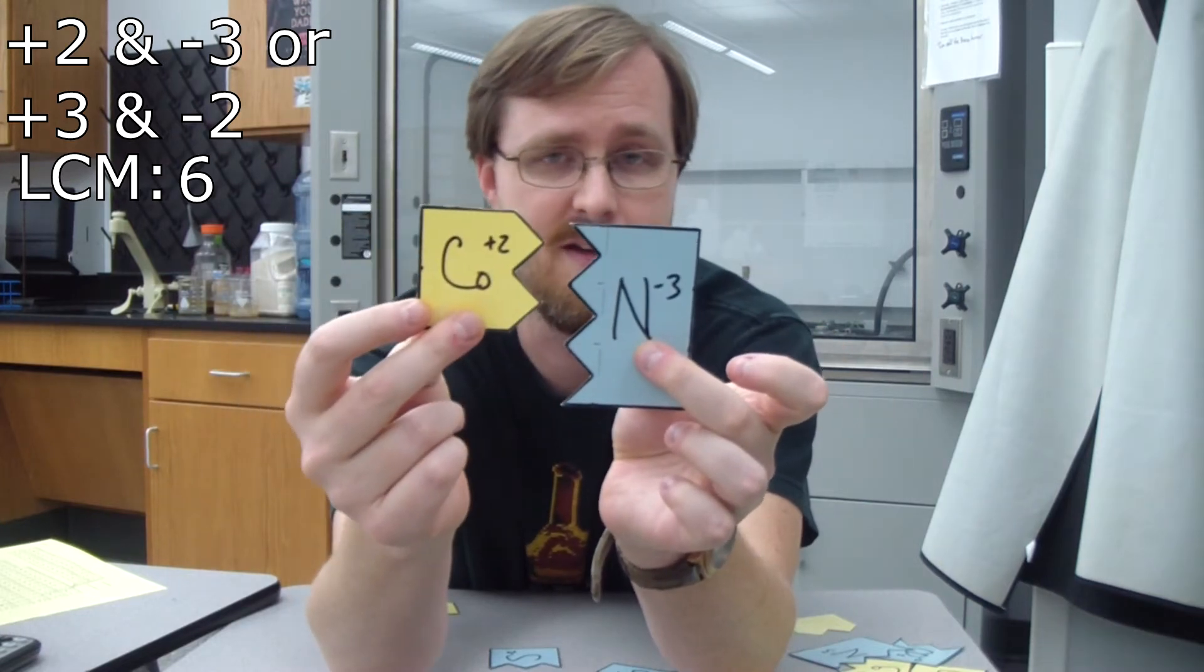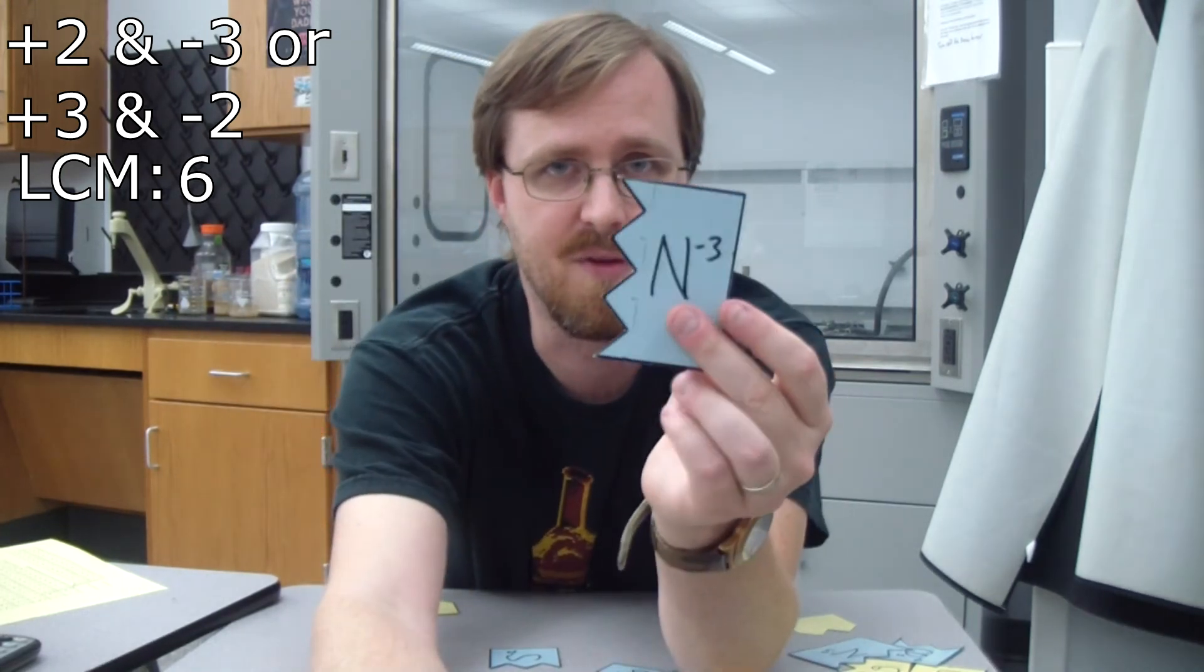So what I'm going to end up needing to do is since this is a positive 2, I need 3 of these to make positive 6, and this is a negative 3, so I need 2 of these to make a negative 6, and then once you put them all together, positive 6, negative 6, that equals 0. So that's the basics right there.